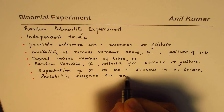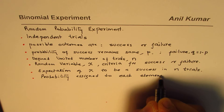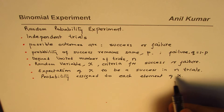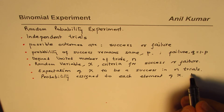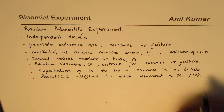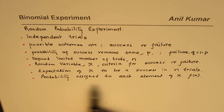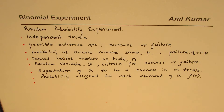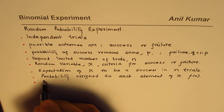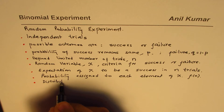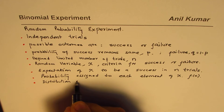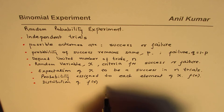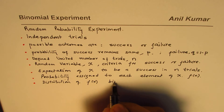We want to find the probability assigned to each element of X. That becomes a function f of X, so we are looking for this distribution. The distribution of the probability of this random variable, f of X, is actually the binomial distribution.